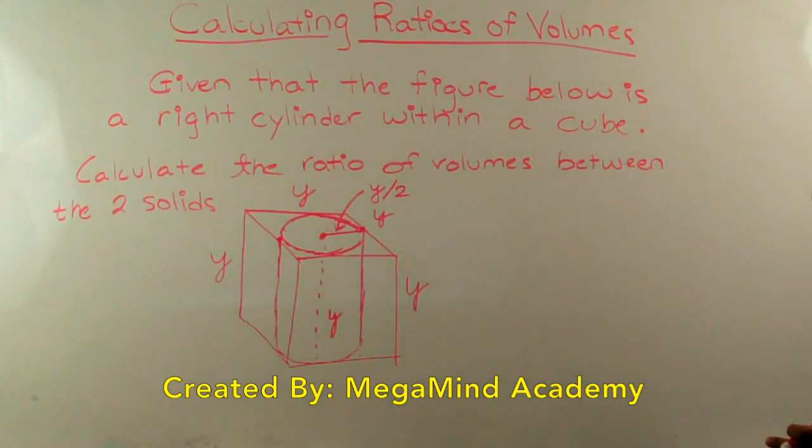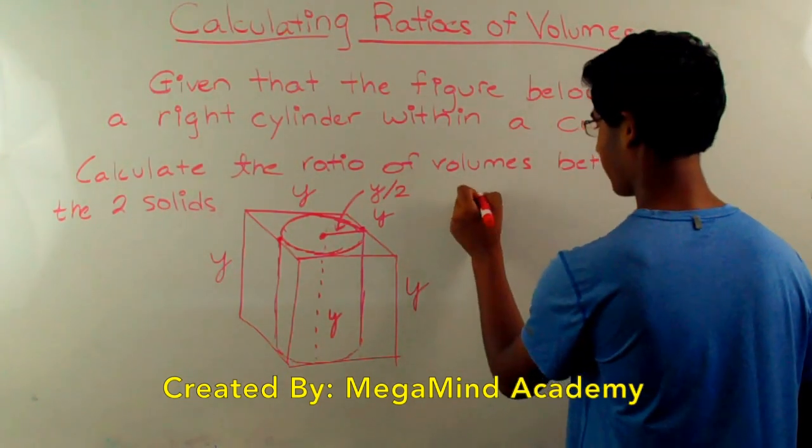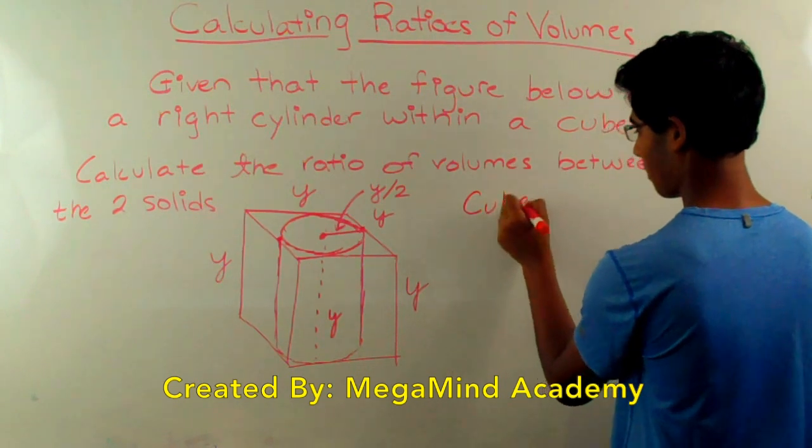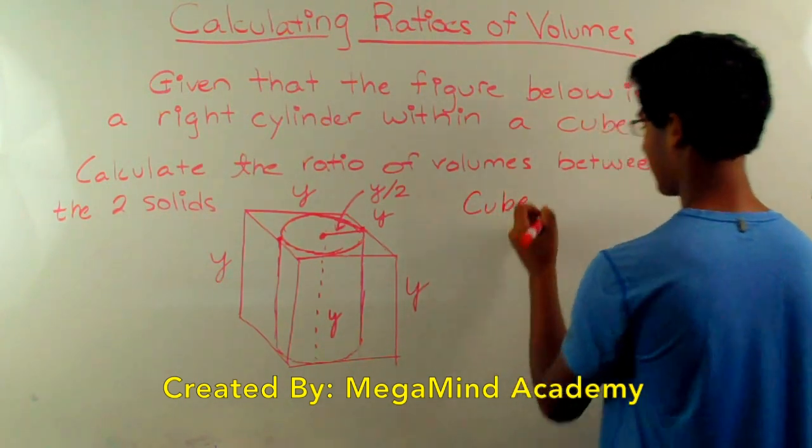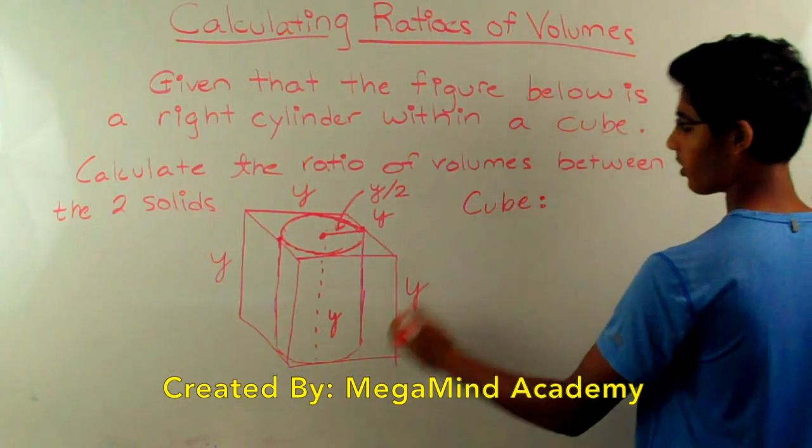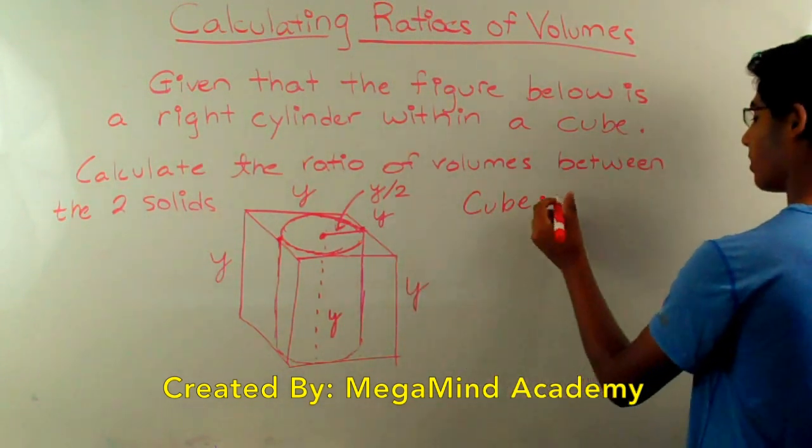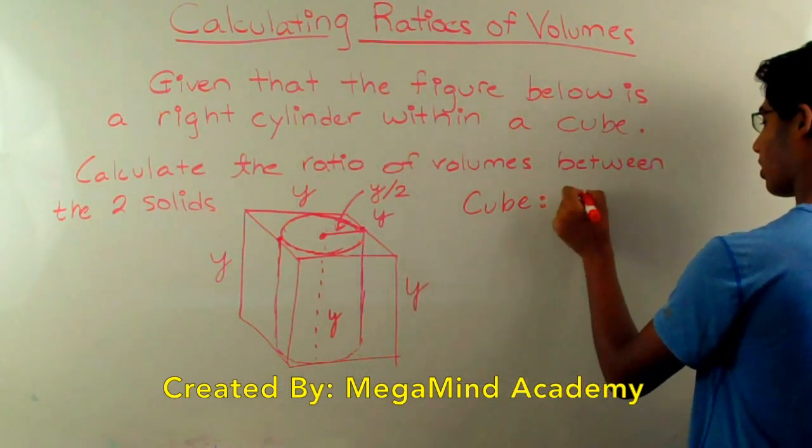So now let's find the volume of the cube and the volume of the cylinder. The volume of the cube is pretty easy. It's just the height times width times length, or the length cubed, which in this case is y cubed.